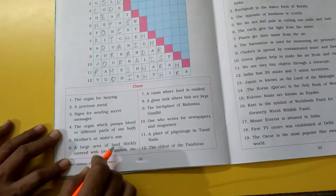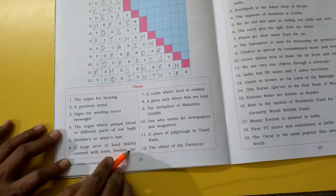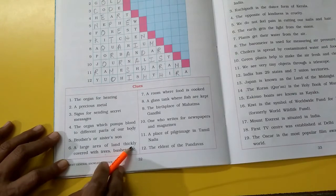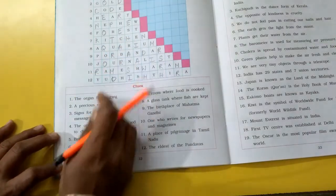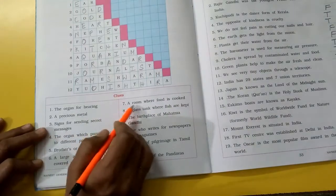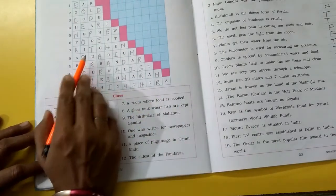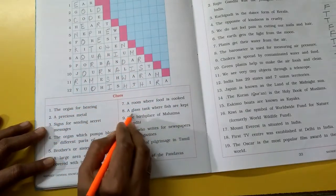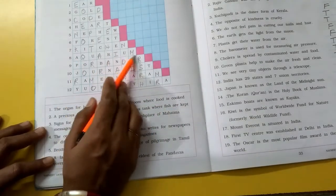A large area of land thickly covered with trees, bushes, etc. Aisi zameen jahan ekdam gahraaye tak trees aur bushes hote hain, wo hai forest. A room where food is cooked. Aisa room jahan pe khana pakaya jata hai. Kitchen. A glass tank where fish are kept. Aquarium.